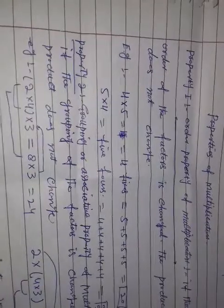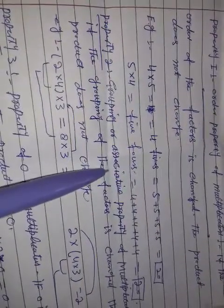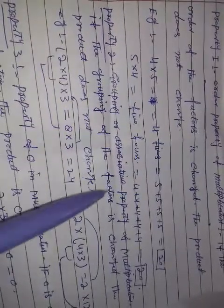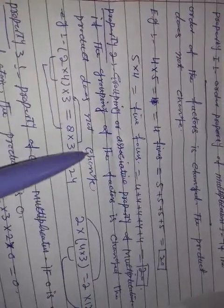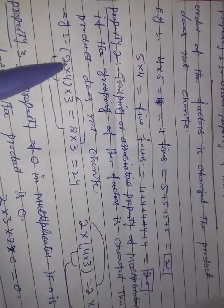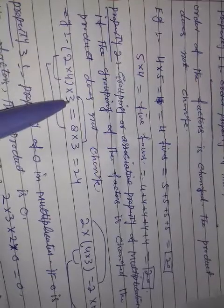Property second, grouping or associative property of multiplication. If the grouping of factors is changed, the product does not change. For example, 2 into 4 into 3.